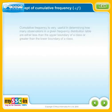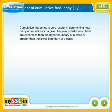Cumulative frequency is very useful in determining how many observations in a given frequency distribution table are either less than the upper boundary of a class or greater than the lower boundary of a class.